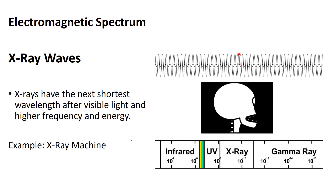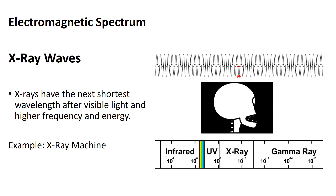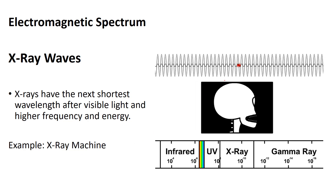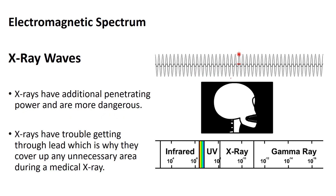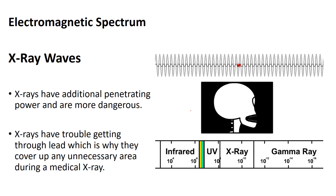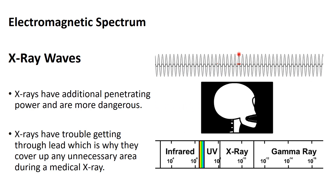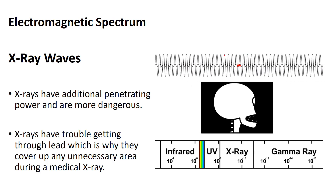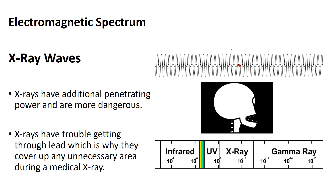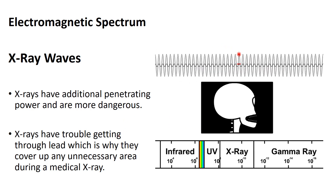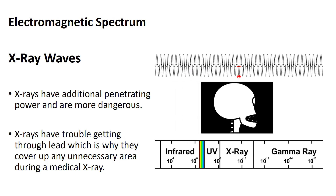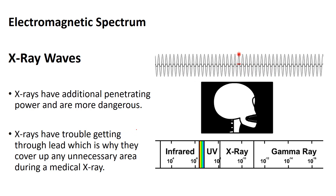X-rays have a lot more energy, even shorter wavelength, and even higher frequency. X-ray machines use this because they can penetrate through your skin, but they get slowed down or stopped by lead or thicker, denser things. Your bones are denser than your skin, so X-rays can't get through dense bones — you see your bones on the film because the X-rays didn't pass through. A radiation technician would cover you with a lead vest to protect you from extra radiation.